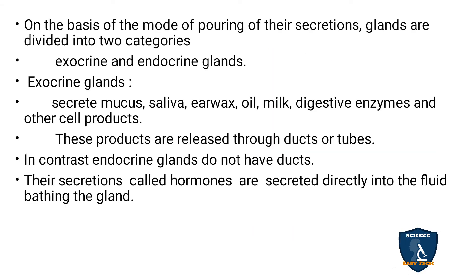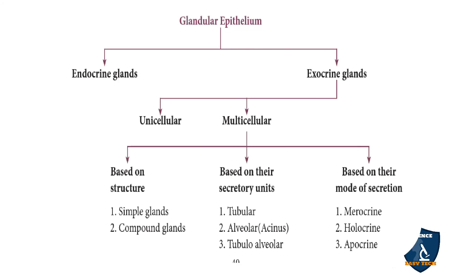On the basis of the mode of pouring their secretion, glands may be of two categories: exocrine and endocrine glands. Exocrine glands have a duct and secrete substances like mucus, saliva, earwax, oil, milk, and digestive enzymes. Endocrine glands do not have a duct — they are called ductless glands — and they secrete hormones directly into the fluid bathing the gland.